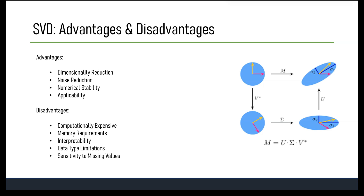Additional disadvantages: interpretability — while SVD effectively reduces dimensionality, the transformed features might not be easily interpretable in the original context, hindering understanding of underlying patterns. Data type limitations mean SVD might not be directly applicable to non-numeric or categorical data, which requires pre-processing. SVD is also sensitive to missing values, which require pre-processing steps that can affect the quality of decomposition. That's all for SVD — see you in the next video, thank you.